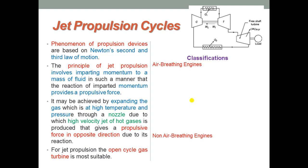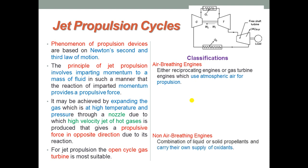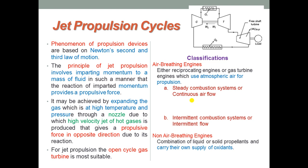Air breathing engines are reciprocating engines or gas turbines which use atmospheric air for propulsion purposes. Non-air breathing engines make a combination of liquid or solid propellants and carry their own supply of oxidants. Air breathing engines are classified into two cases: steady combustion system or continuous air flow system, and intermittent combustion system or intermittent flow system. Non-air breathing engines are of two types: liquid propellant or solid propellant.